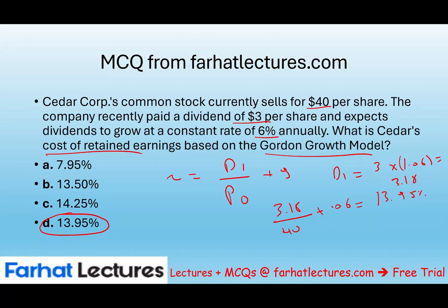So what does that mean? The required rate of return is 13.95% — the investor wants to earn 13.95%. If the company can earn more, they should keep the retained earnings; investors should forego this 13.95% because the company can do better. Go to Farhat Lectures and look at additional resources — multiple choice lectures and other resources — whether you are a student, CPA, CMA, CFA, or any other professional certification. Invest in yourself. Good luck and stay safe.